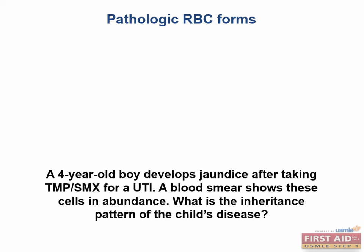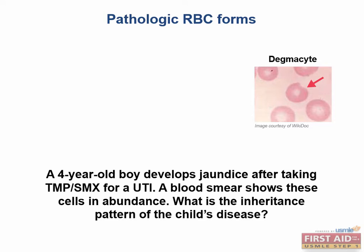Let's try an example. A four-year-old boy develops jaundice after taking TMP-SMX for a UTI. A blood smear shows these cells in abundance. What is the inheritance pattern of this child's disease? Well, if you know that these cells are degmacytes, aka bite cells, and are common in G6PD deficiency, and that these patients are particularly susceptible to sulfa drugs, then you're already halfway to your answer.